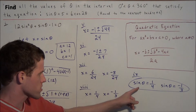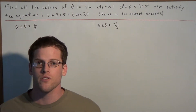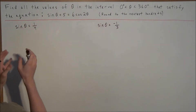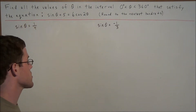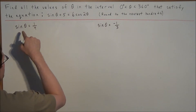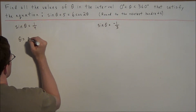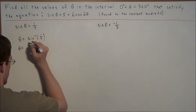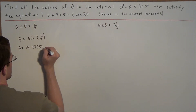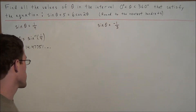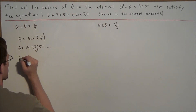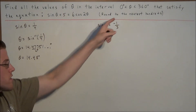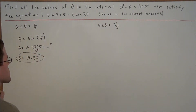For the last stage, we solve for theta using the inverse sine function. For sine theta equals 1/4: theta equals sine inverse of 1/4. Evaluating on a calculator gives approximately 14.4775..., which rounds to 14.48 degrees. This falls in the interval from 0 to 360 degrees and lies in the first quadrant, so it is one valid solution.